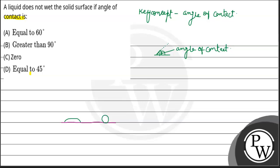Let's see what the angle of contact is. This is our surface. If the liquid wets the surface, the angle of contact is less than 90 degrees — that is theta less than 90 degrees. If it does not wet the surface, the angle of contact theta is greater than 90 degrees.